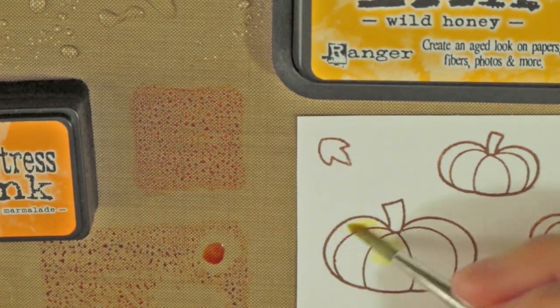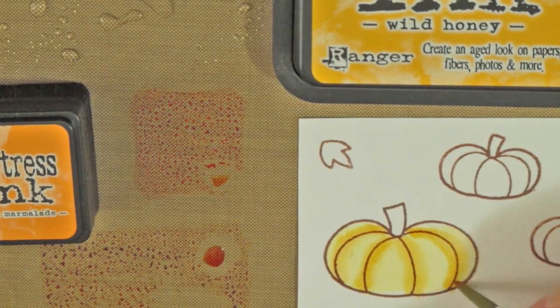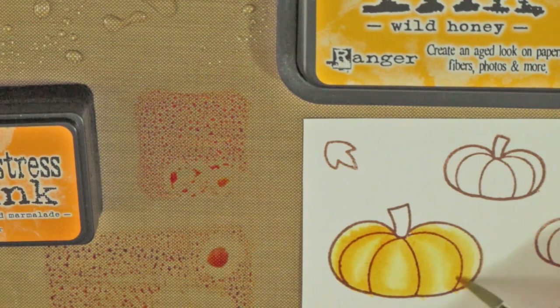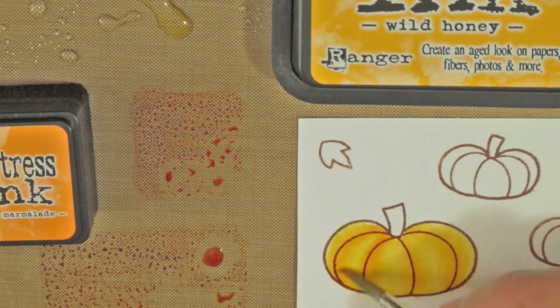For the pumpkins, I am adding the wild honey distress ink diluted with water to the whole image. Then I will add some spiced marmalade distress ink along the lines of the image, which will add some dimension.